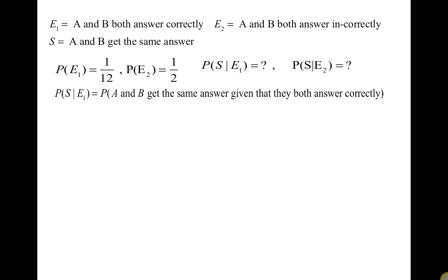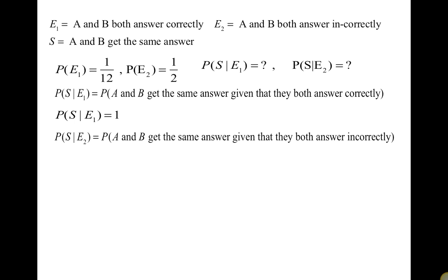If A and B both answered correctly, their getting the same answer is a sure event, so P(S|E1) = 1. For P(S|E2) — the probability that A and B get the same answer given they both answered incorrectly — this is equivalent to them having made the same error, which is given as 1/20. So P(S|E2) = 1/20.